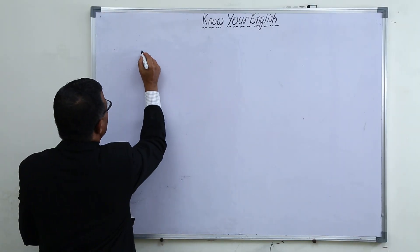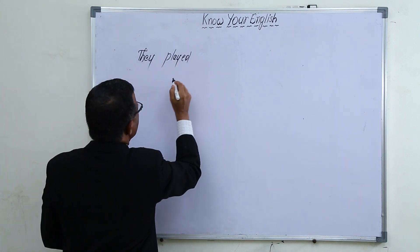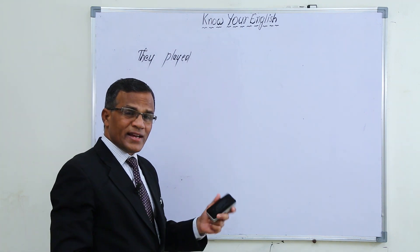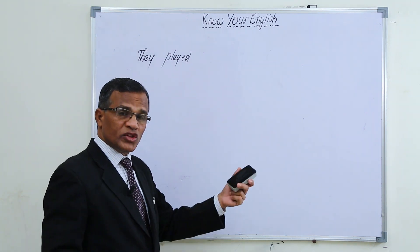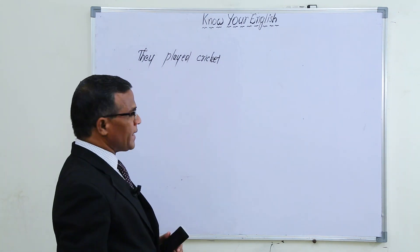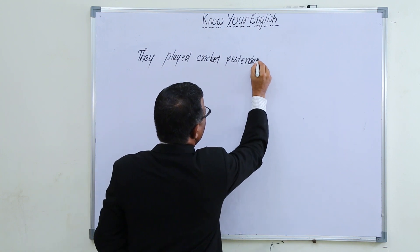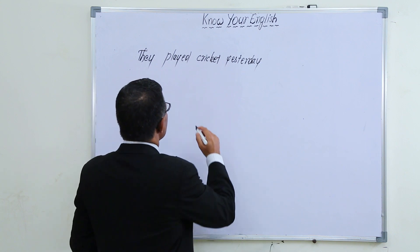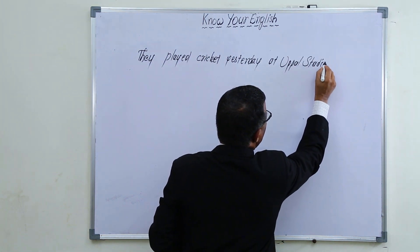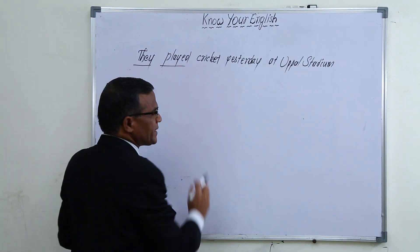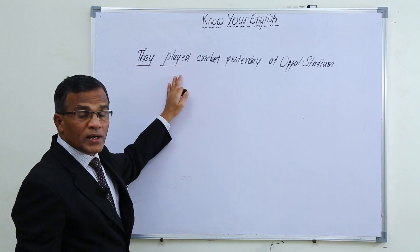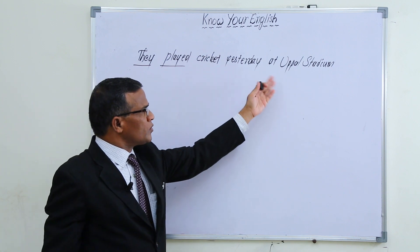If you are able to use a subject and verb — for example, 'they played' — these are very important. You can use other words by your common sense. They played cricket, they played football, or anything. You can easily get an idea: 'they played cricket yesterday at the stadium.' So if you are comfortable with subject and verb, the other words you can use by your common sense.